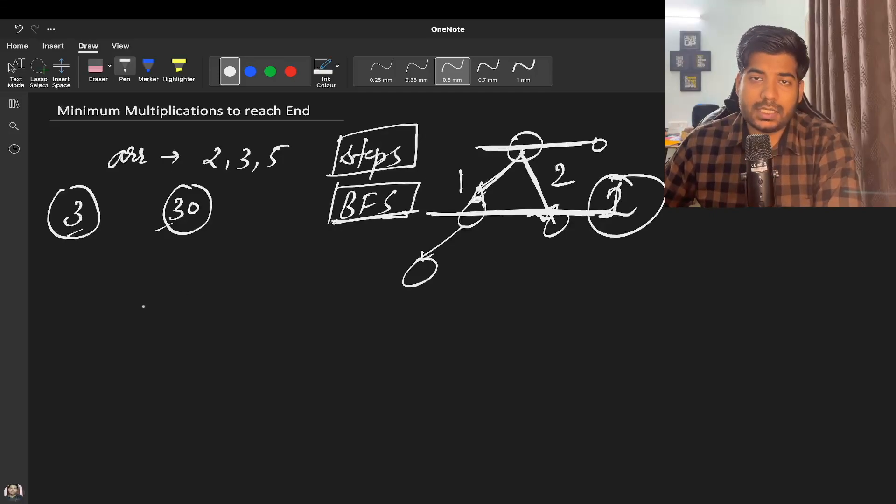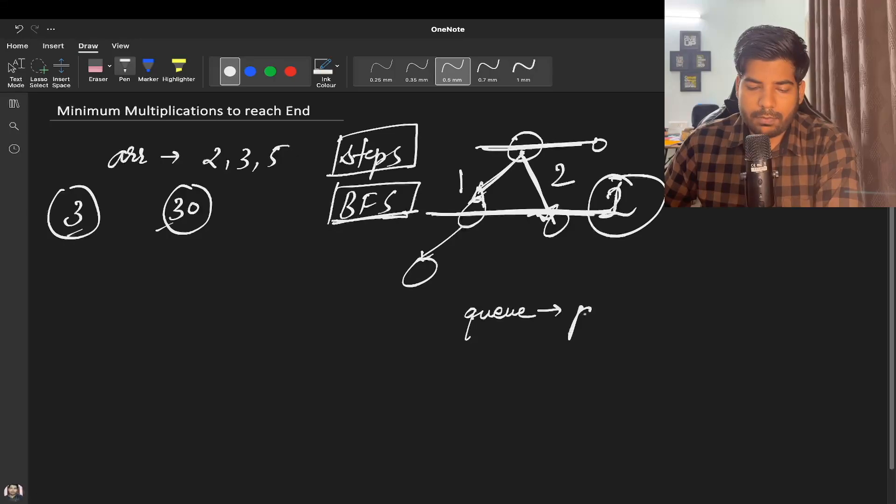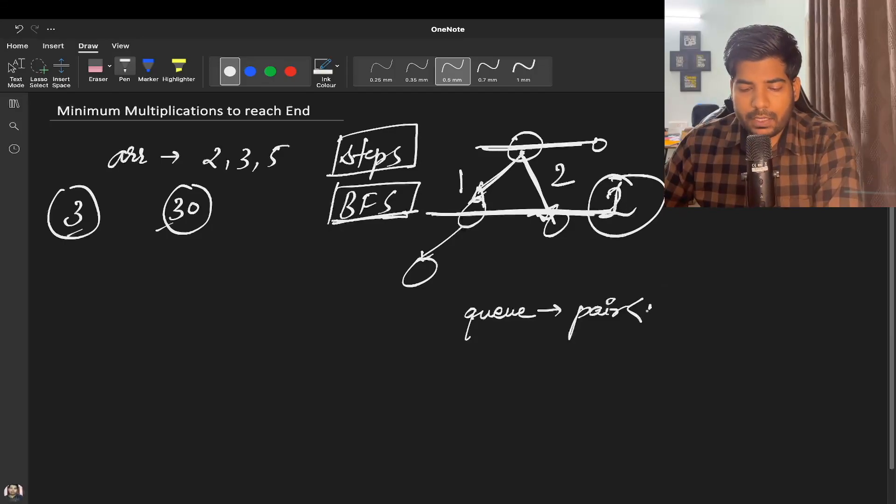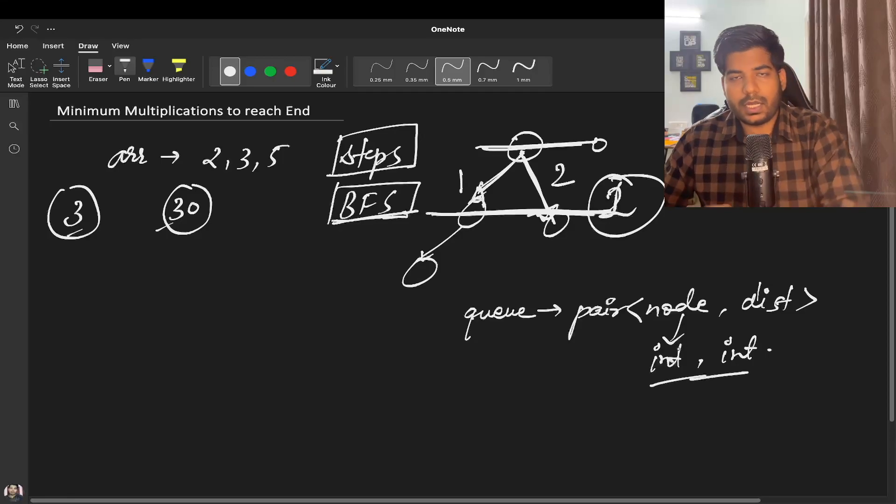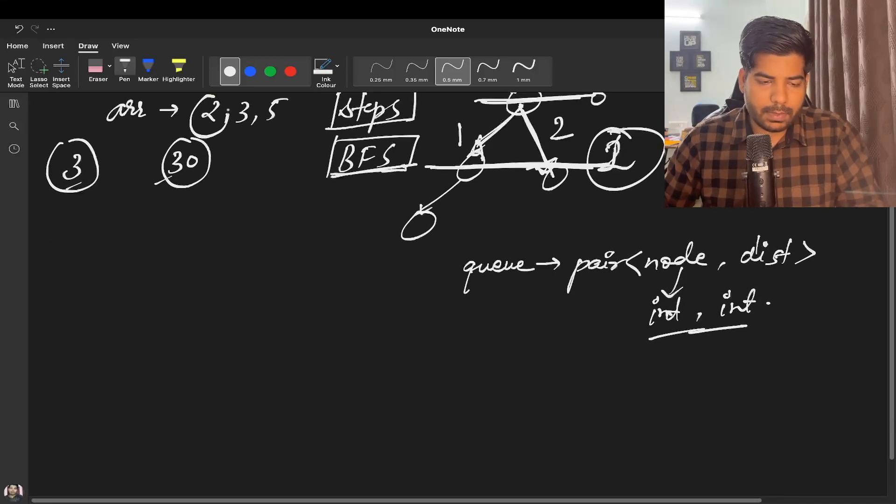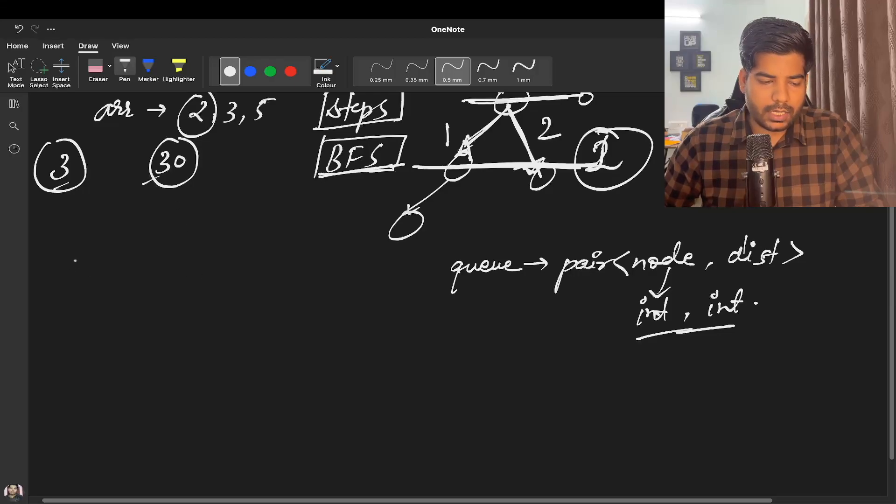Let's discuss how we can use BFS algorithm and solve this problem. For BFS, you know we need a queue. Our queue will be a type of pair. Why pair? We have to store the node as well as the node's distance. So two things to store, which will be of type int, int. So we have declared the queue.